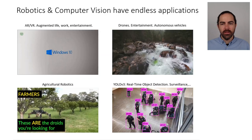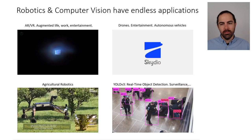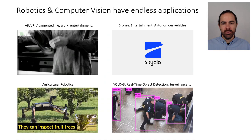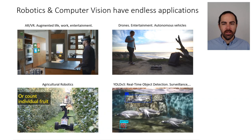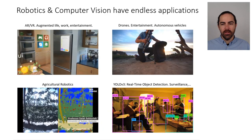YOLO has multiple applications — surveillance, recognition, and it can also track. It's processing one image at a time, detecting what the objects are in the scene, where they are, and what they are. It works quite well.